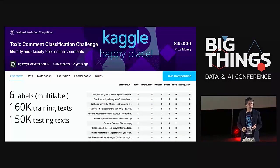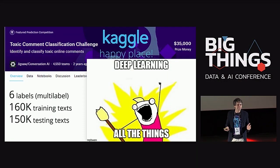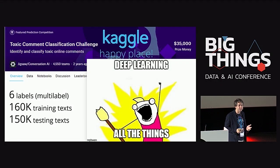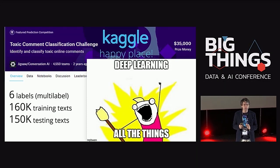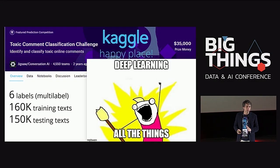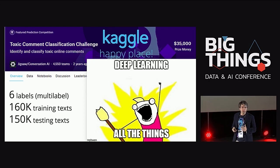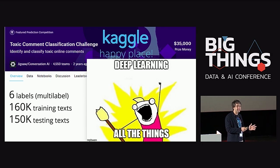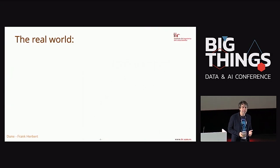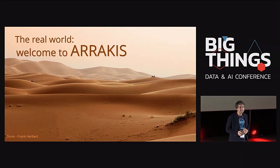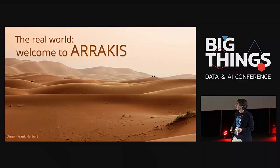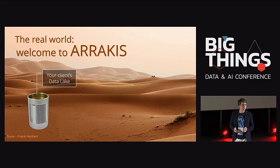When this competition appeared on Kaggle, everybody started doing deep learning — and you can actually get very good results. But winning requires clever feature engineering and synthetic samples. The real-world problem, however, is different. Welcome to Arrakis — you don't have data. Your data lake looks like an empty can in the desert. You can't train very large machine learning models because you have no data.